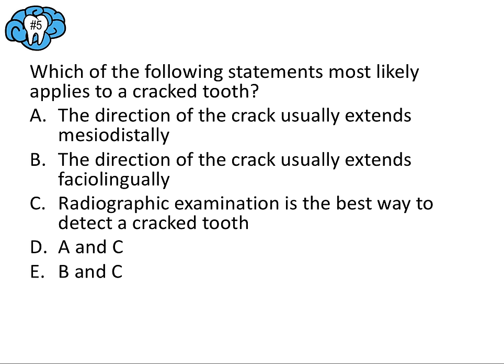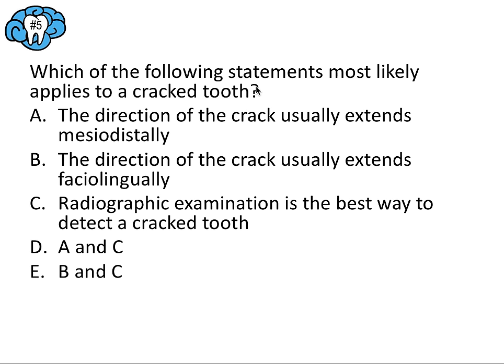Now that that information is fresh, we can revisit question five: Which of the following statements most likely applies to a cracked tooth? The direction of the crack is mesiodistal, occurring across the marginal ridges of posterior teeth. Radiographic examination is not the best way to detect a cracked tooth — dyes, transillumination, or the tooth sleuth are much more valuable than radiographs, which can easily miss a crack. So the answer is A only.